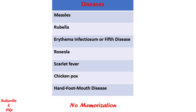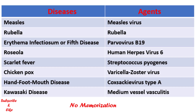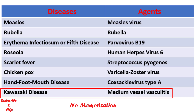What are the common childhood rashes? These are measles, rubella, erythema infectiosum or fifth disease, roseola, scarlet fever, chicken pox, and hand-foot-mouth disease. You can also see the agents causing these diseases. One more disease that causes a rash is Kawasaki disease, a medium vessel vasculitis not caused by an agent. We will discuss it too in this video.